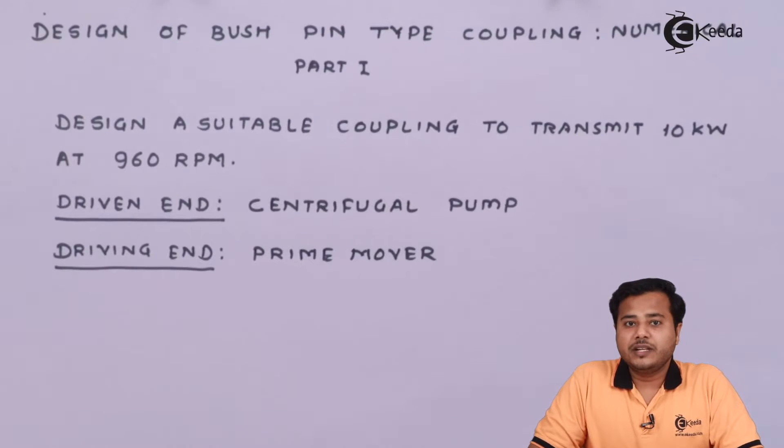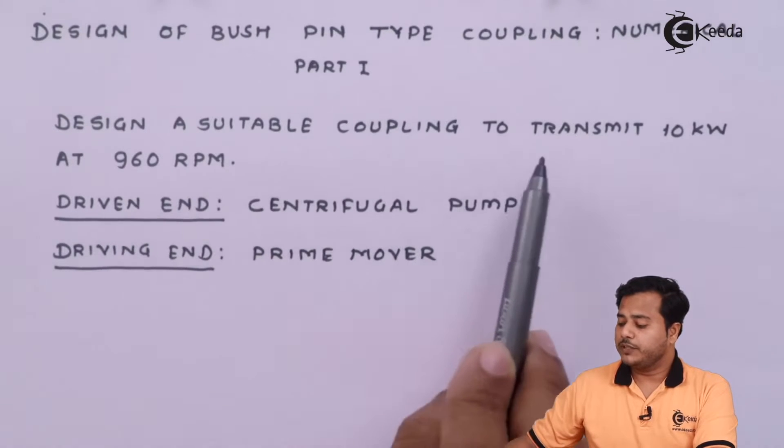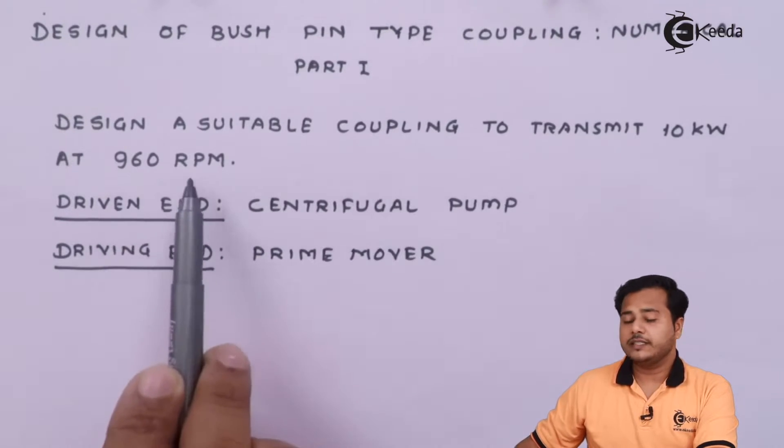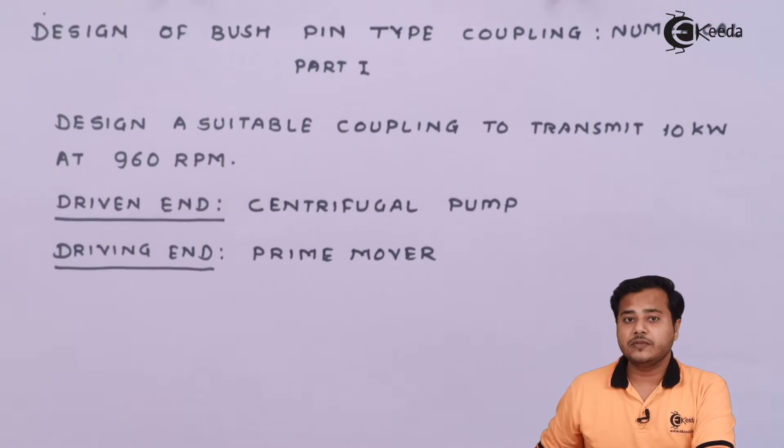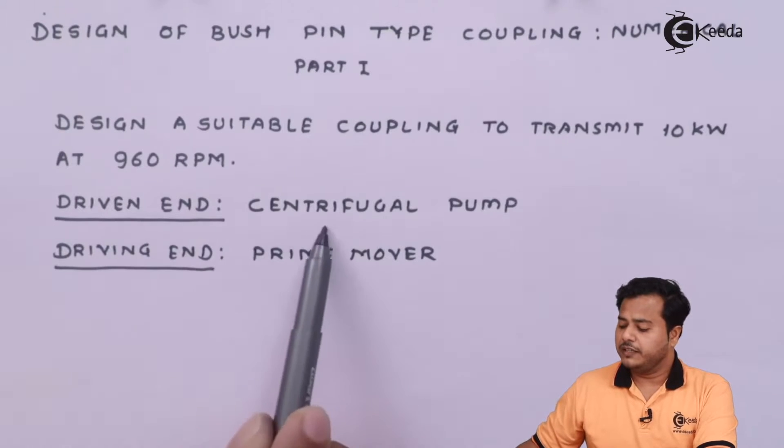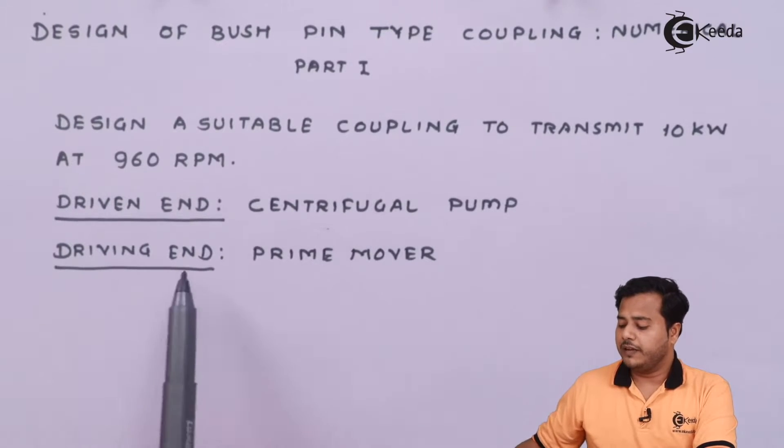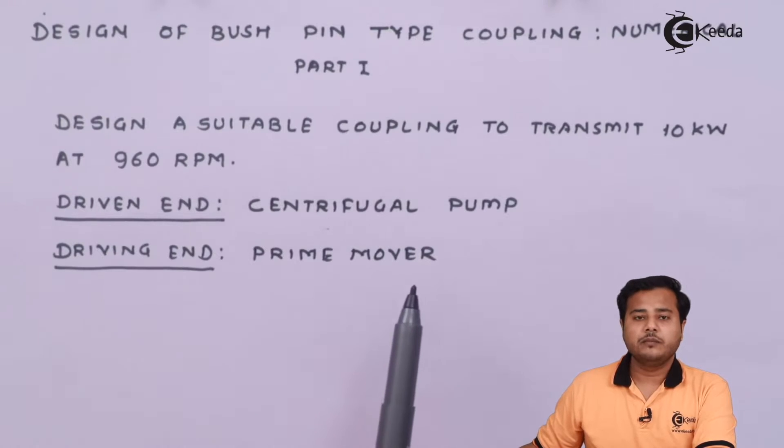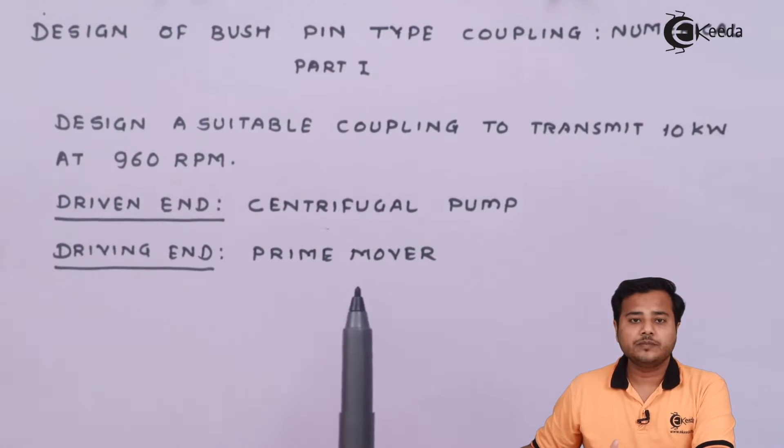You can see the numerical statement on the screen which says design a suitable coupling to transmit 10 kilowatt at 960 RPM. The only things we have been given are driven end which is centrifugal pump and driving end is some prime mover. Prime mover can be some motor, it can be an engine also. So you have to select appropriate prime mover and appropriate coupling.